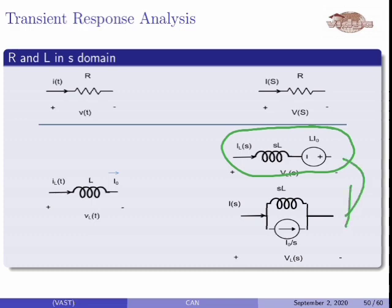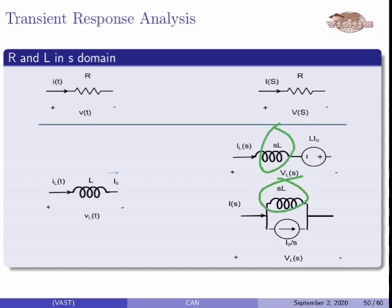This is the source transformation we will use. Current source in parallel with an inductor — how do we normally do this? A resistance in series with a voltage source becomes a current source in parallel with a resistance. Here, in the source transformation, the resistance is replaced by the inductor. The value becomes L times I0 divided by SL.